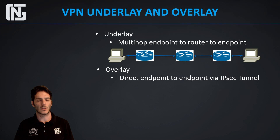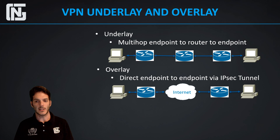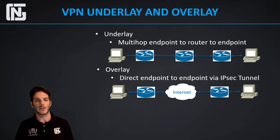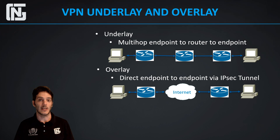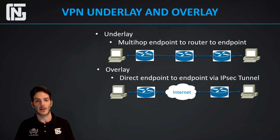The overlay type is direct endpoint-to-endpoint via IPsec tunnel. We have a router or firewall with some connectivity in the middle — internet in this case — where the internet could be any service provider: Time Warner Cable, Verizon, Spectrum, AT&T, or even 4G LTE cellular. All that matters is there is an interface providing internet connectivity to the router over that transport. If it's publicly accessible, it's referred to as internet.